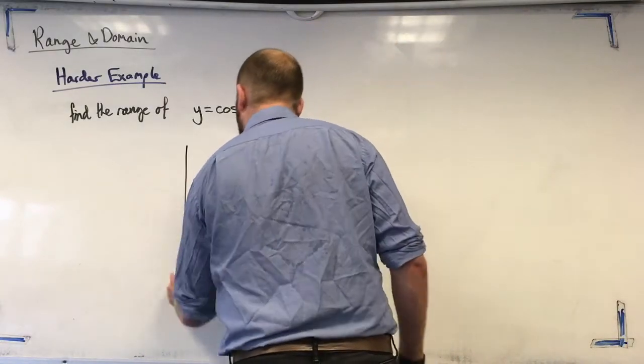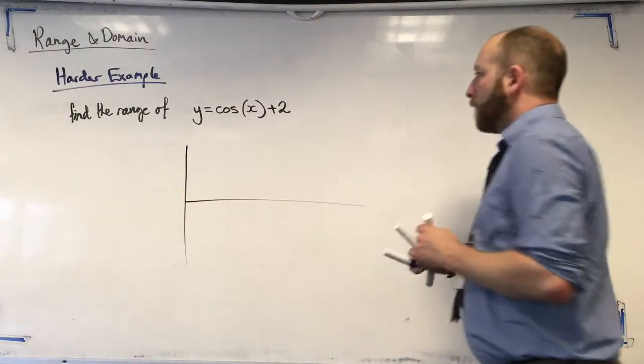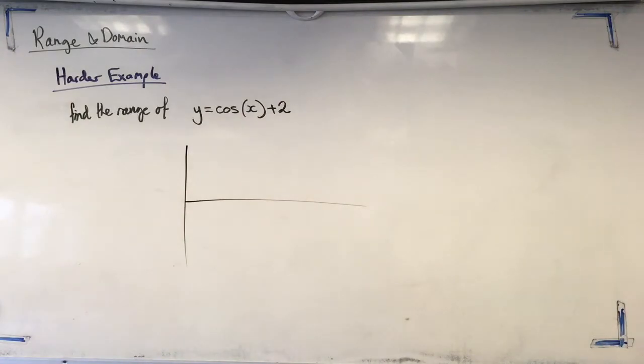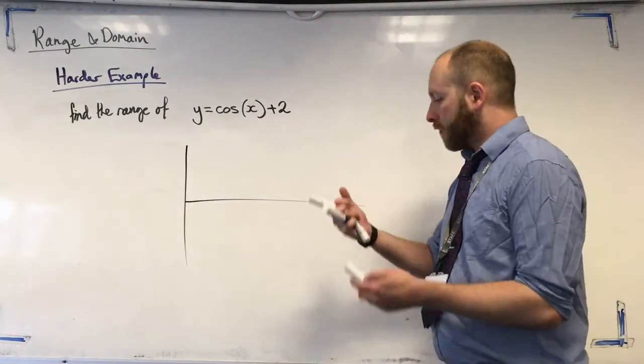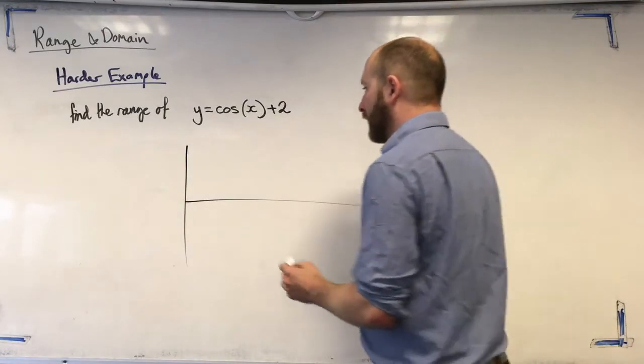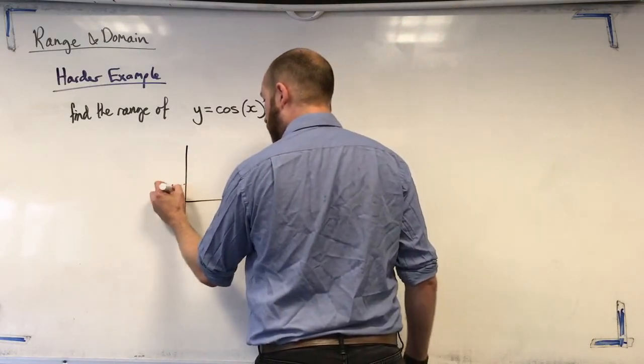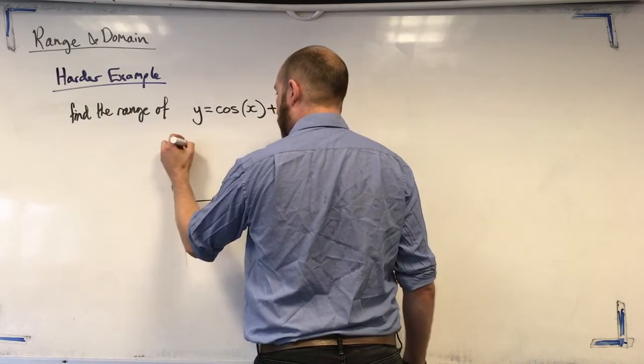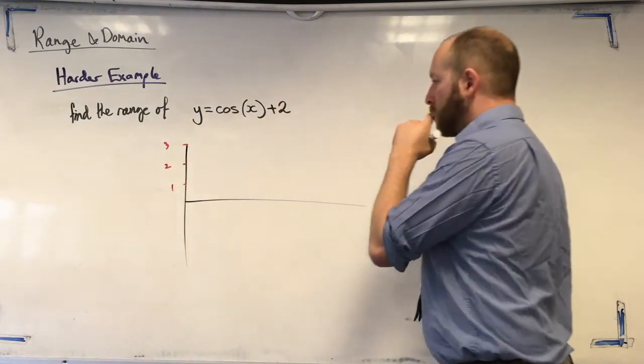It's going to be a cosine wave that has been moved up by 2. So, these are pretty tricky to draw sometimes. So, I'm going to kind of cheat and put some markers in there. So, let's move 1, 2, and 3. Now, cos we moved it up 2.